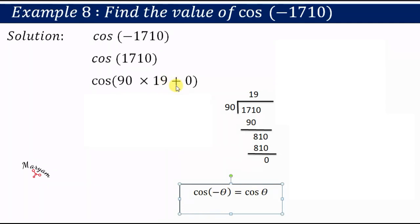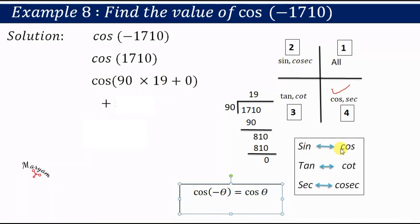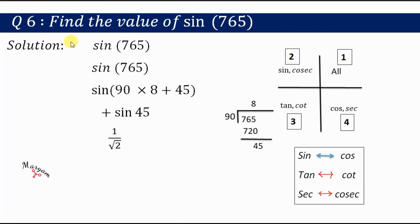Adding something to the 19th quadrant, we jump into the 20th quadrant. Counting: 1st, 2nd, ... 20th — we are in the 20th quadrant. In the 20th quadrant, cos and sec are positive, so we get a positive sign. Since 19 is odd, the trigonometric function changes: cos becomes sine. The remainder is 0, so we write sin 0° = 0.